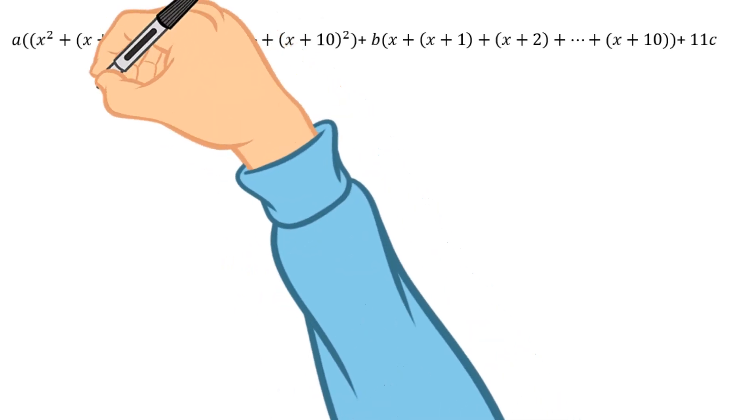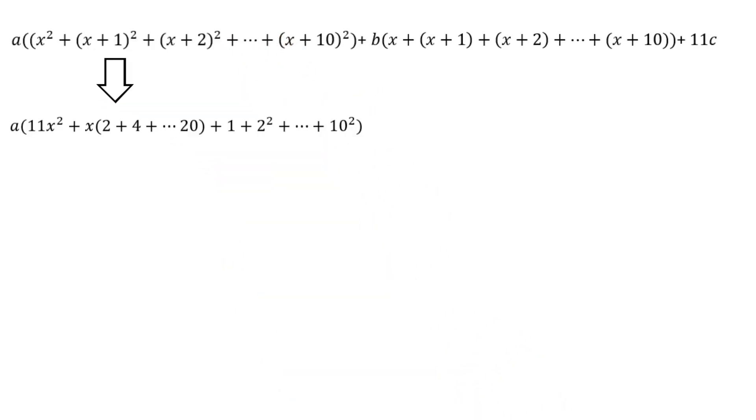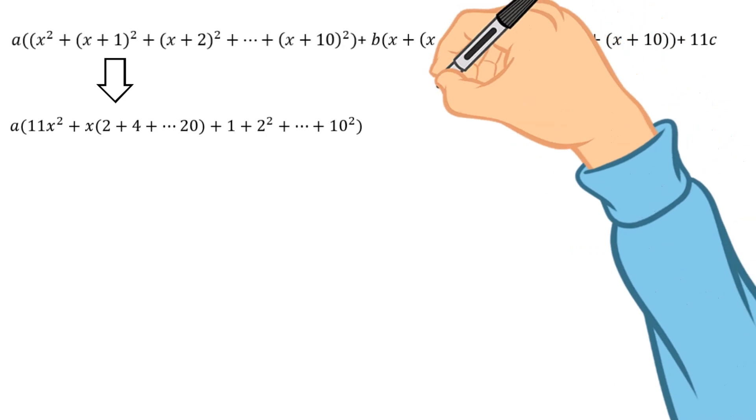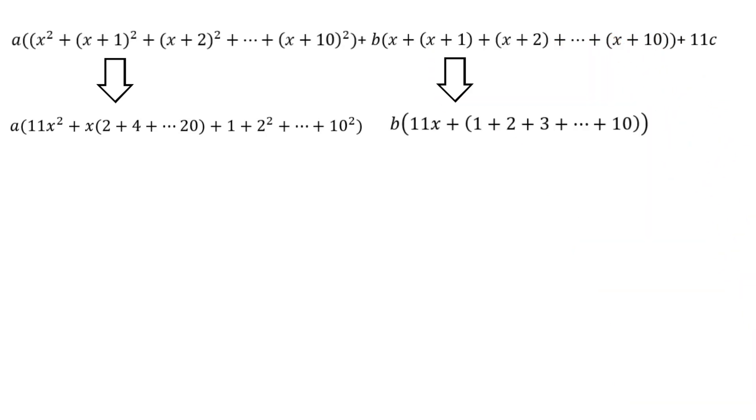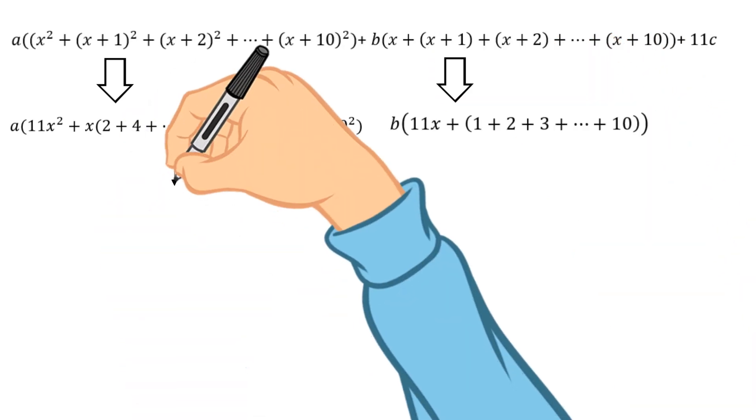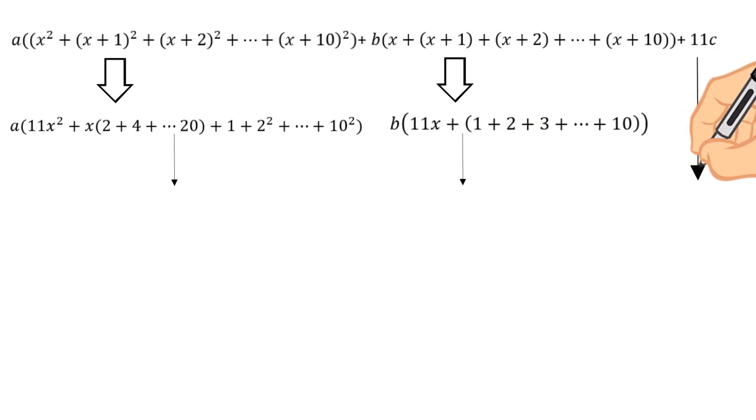Therefore, for the terms in front of coefficient A, we will have the following expression. And doing the same operations for B will lead up to this form. By combining coefficients in front of A, B, and C together, we can come up with the following representation of the sum.